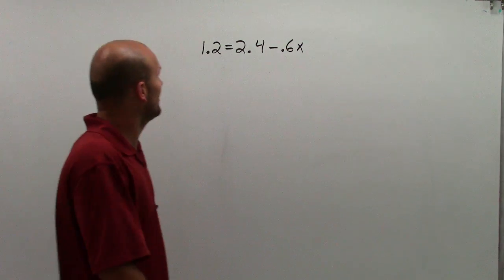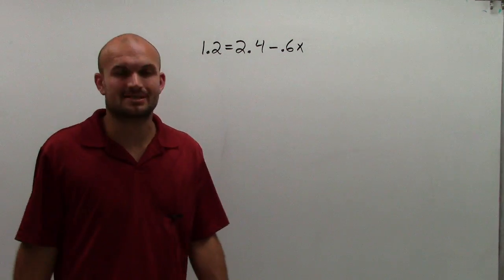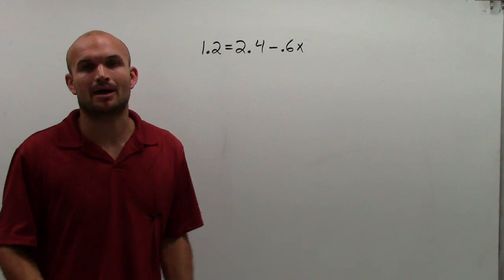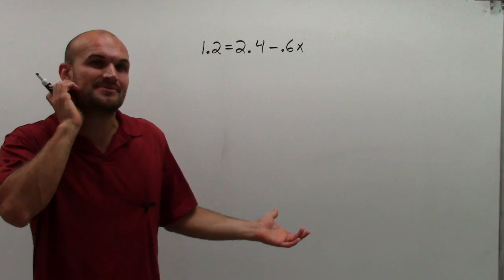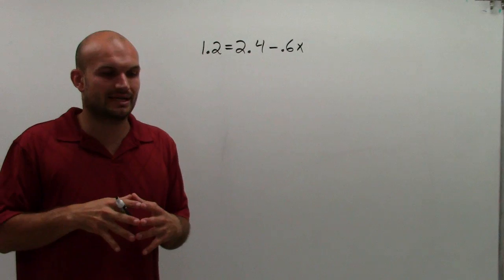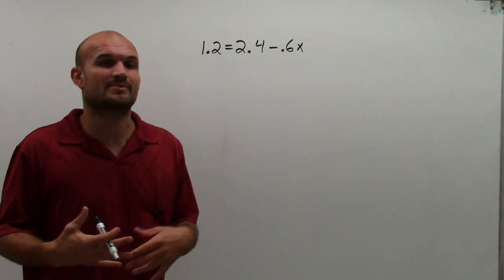So anyway, here I have 1.2 equals 2.4 minus 0.6x. This is the exact same type of problem, but I want to work through a couple decimal problems so you don't get frustrated with it.